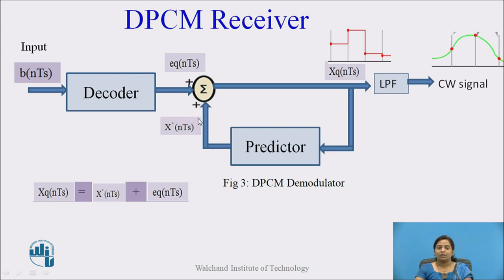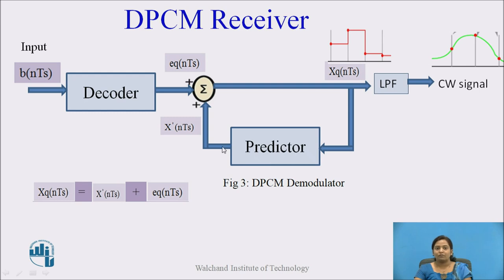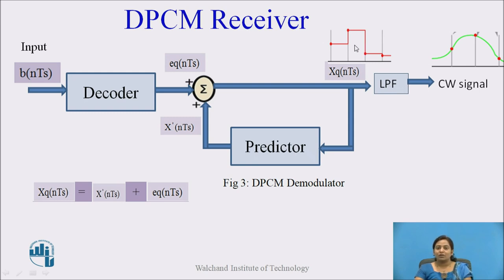Let us see the working of the DPCM receiver, that is the DPCM demodulator. The input data is given to the decoder. The decoder converts the input data into the quantized error signal. Then the adder adds this with the predicted value from the predictor filter. The output of the adder is XQ(NTs) = X'(NTs) + EQ(NTs). This output is given to a low pass filter, which converts the staircase signal into the continuous time signal.